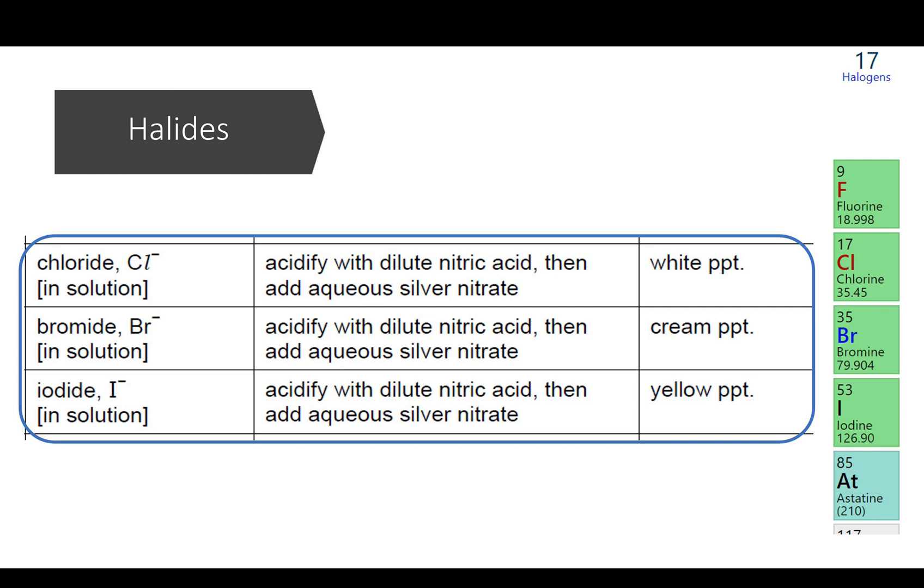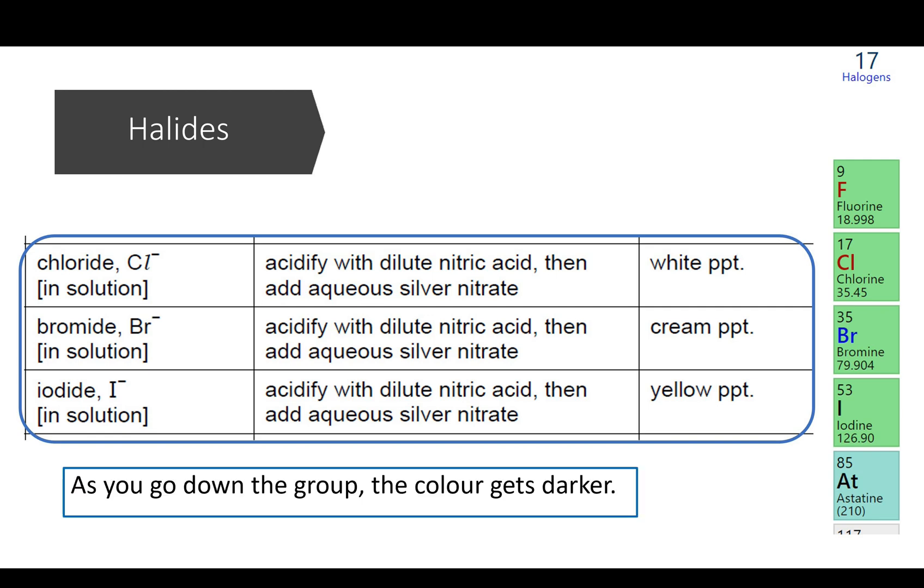One observable trend of halogen is that when you go down the group, the color of the elements get darker. This is true for the color of the precipitate formed in the test as well. Silver chloride is white, silver bromide is cream and silver iodide is yellow. When you check the precipitate color, always check it against a white background to help distinguish the faint colors such as between cream and white.